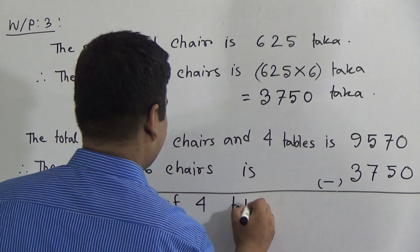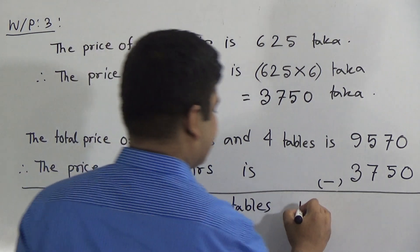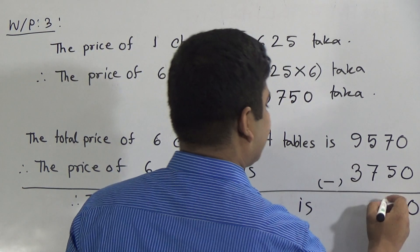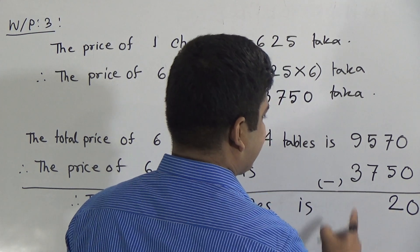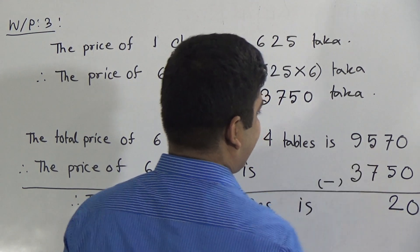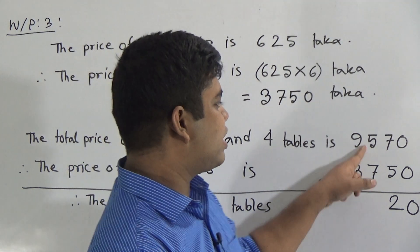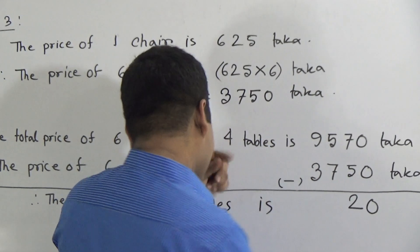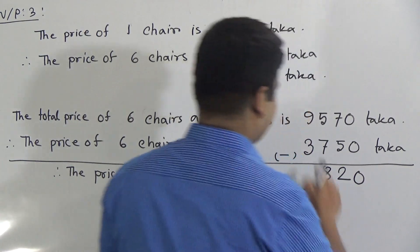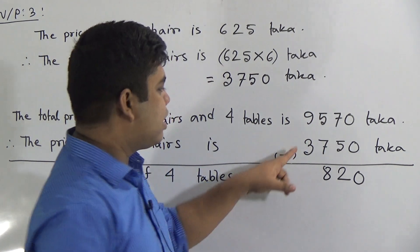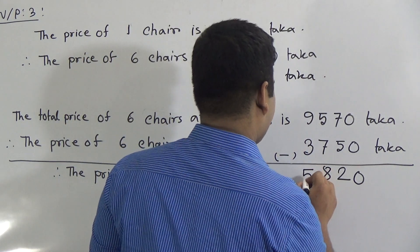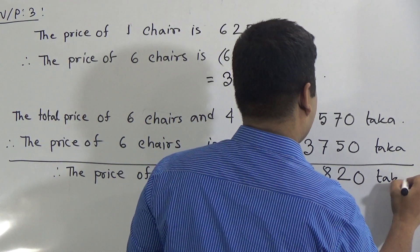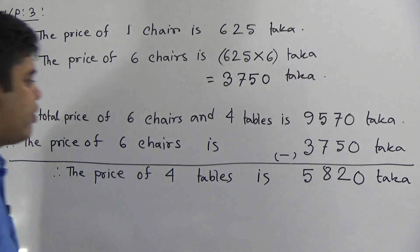Then we get the price of 4 tables. 0 minus 0 is 0. If we subtract 5 from 7, then we get 2. Now again, we subtract 7 from 5, but 5 is smaller than 7. So we take this as 15. Now we subtract 7 from 15 and we get 8. So we subtract 8, carry one. That 1 is added with this 3, it will be 4. Now, 4 to 9, it will be 5.